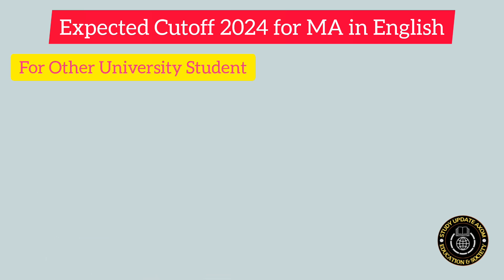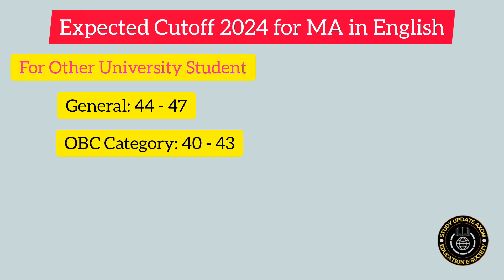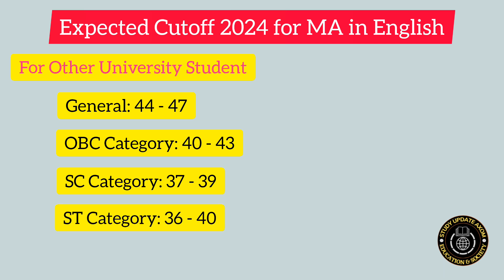Now for other university students — those who completed their graduation from a university other than Guwahati University — for General category the expected cutoff may be 44 to 47. For OVC category it may be 40 to 43. For SC category the cutoff may be 37 to 39. For ST category including ST Hills and Plains the expected cutoff may be 36 to 40. For EWS category the expected cutoff for MA in English may be in the range of 38 to 42.